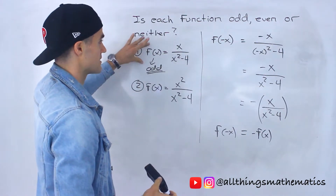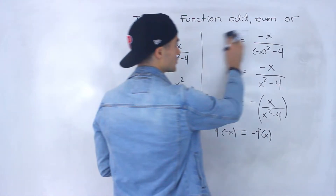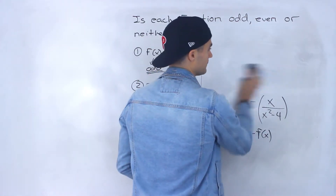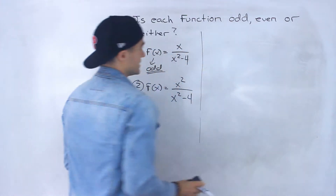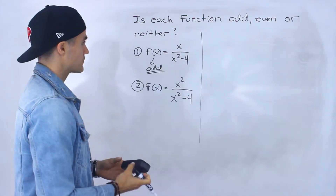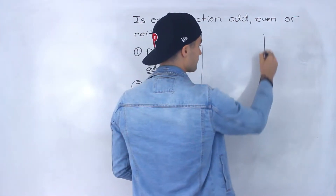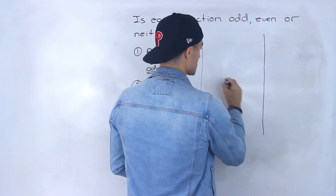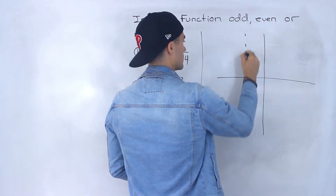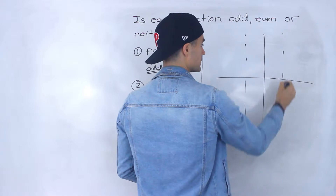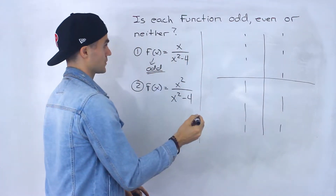So the answer to number one is that this is an odd function. The way this looks graphically — we'll go into more detail in the rational functions chapter — but we're going to have two vertical asymptotes at negative two and positive two.